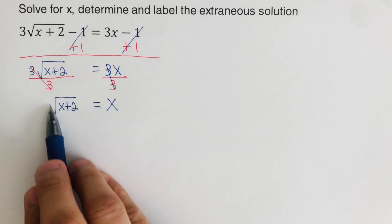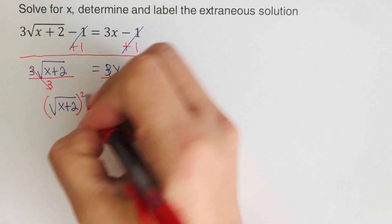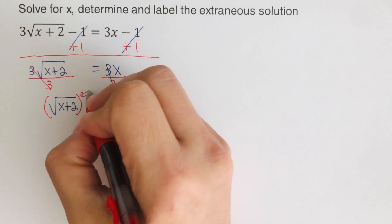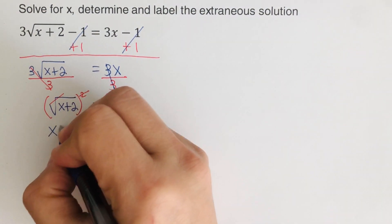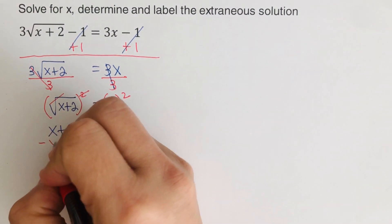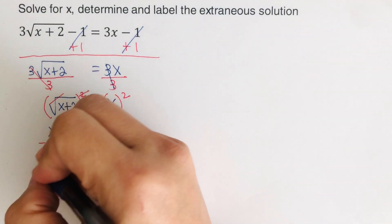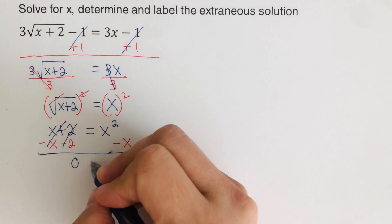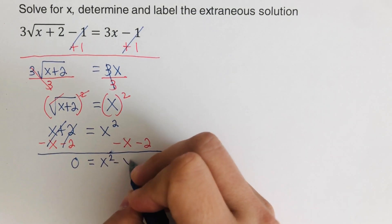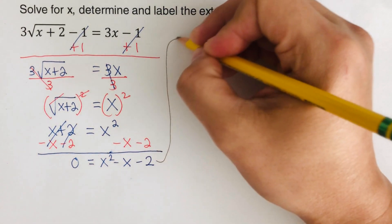Now the square root of x plus two is isolated on one side, so we square both sides to remove the square root. We cross out the squared and the square root, leaving x plus two equals x squared. To use the zero product property, we make one side equal to zero by subtracting x and subtracting two from both sides, giving zero equals x squared minus x minus two.